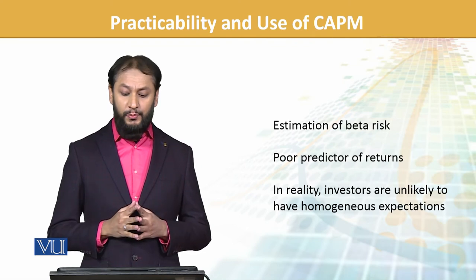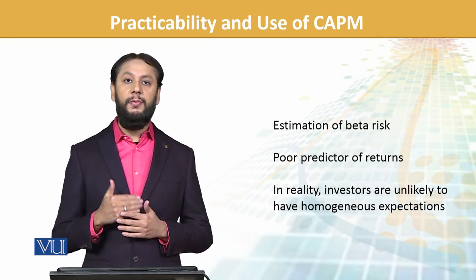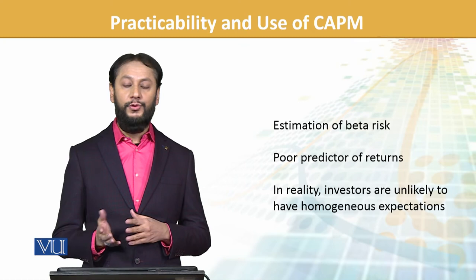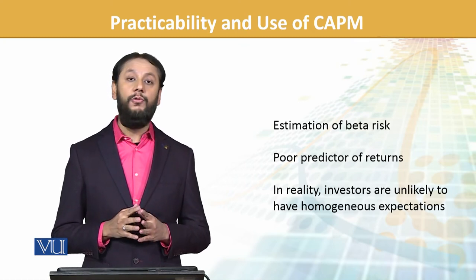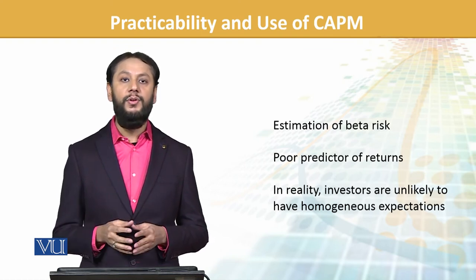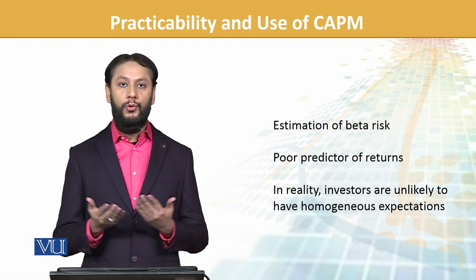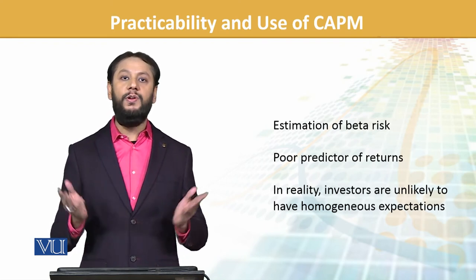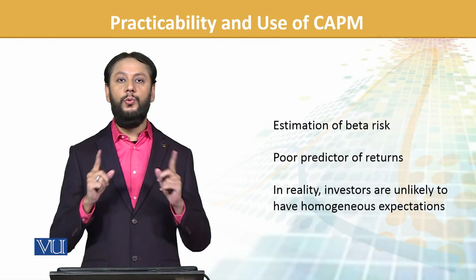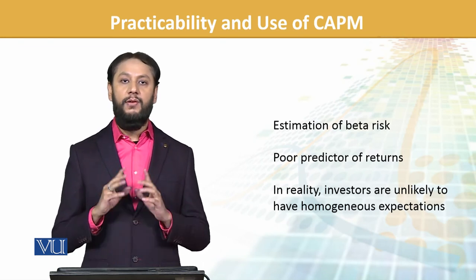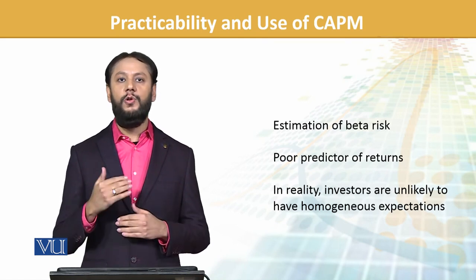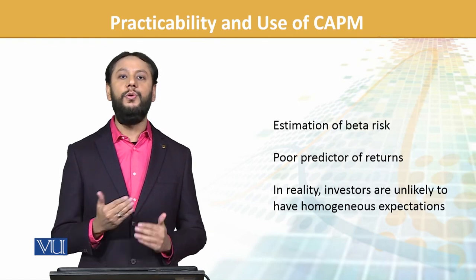Estimation of beta is a poor predictor of returns, because it is based on prior data and it's not necessary that it reflects the future. In reality, investors are unlikely to have homogeneous expectations — having the same expectation practically is not possible, as two people's opinions rarely align, let alone all investors. So CAPM still has many limitations, but in conclusion it is very beneficial, has wide acceptability, and is frequently utilized. We need to know it, apply it, but also know the assumptions and limitations.